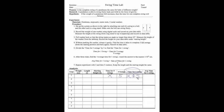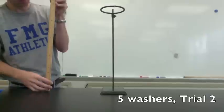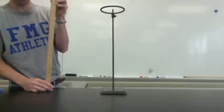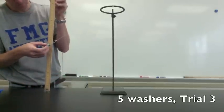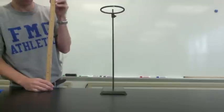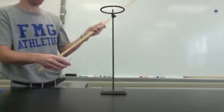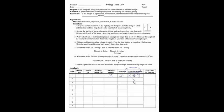Complete three trials for the same weight. Now that you've worked out the time for one swing for three trials, you need to average the times. To do that, take each of the three trials, add them up, and divide by three. Round your number to one tenth of a second.